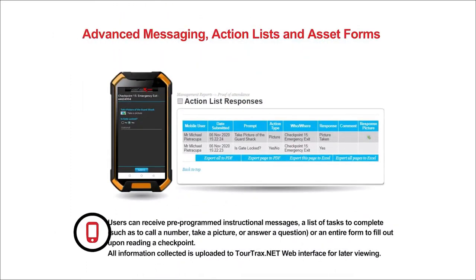Advanced Messaging, Action Lists, and Asset Forms: Users can receive pre-programmed instructional messages, a list of tasks to complete — such as to call a number, take a picture, or answer a question — or an entire form to fill out upon reading a checkpoint. All information collected is uploaded to the TourTrax.net web interface for later viewing.